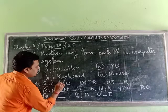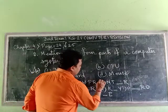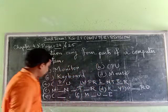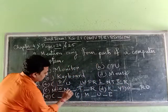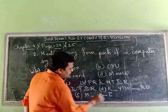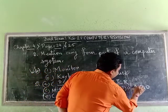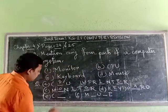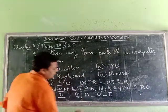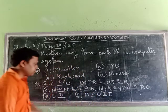Now see the answers. Number A: CPU. Number B: Printer. Number C: Monitor. Number D: Keyboard. Number E: CD. Number F: Mouse.